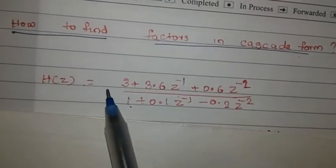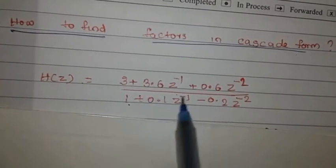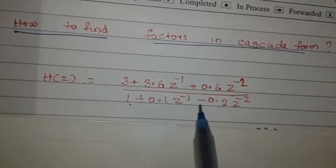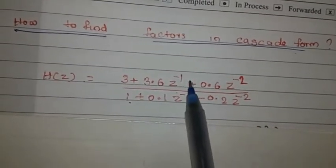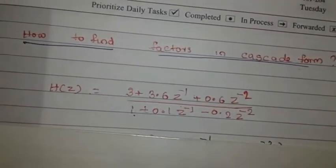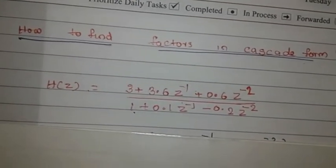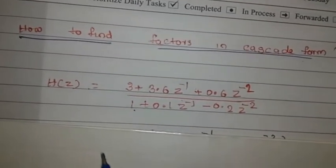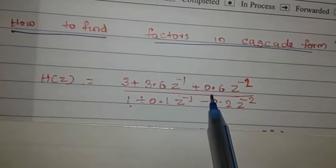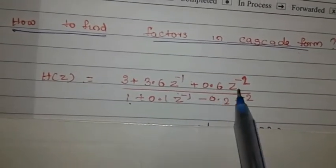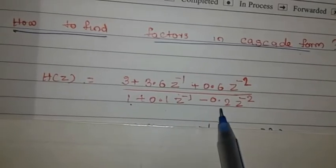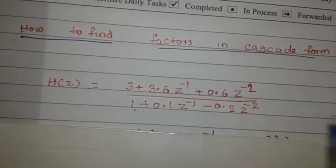In the IAR example, the denominator is a numerator function. In the IAR example, H of Z equals 3 plus 3.6 Z-inverse plus 0.6 Z-inverse-2, divided by 1 plus 0.1 Z-inverse minus 0.2 Z-inverse-2.